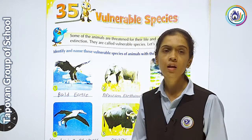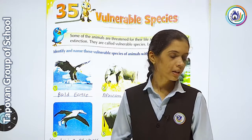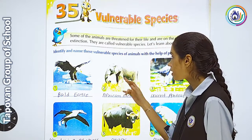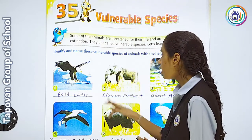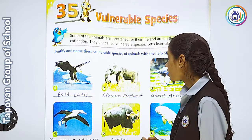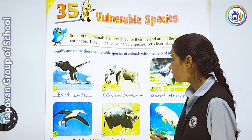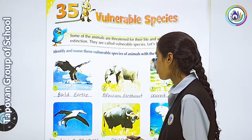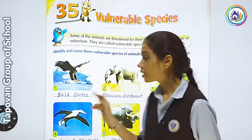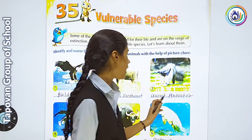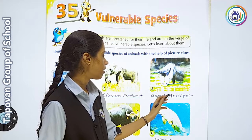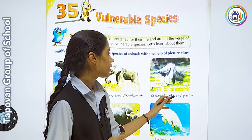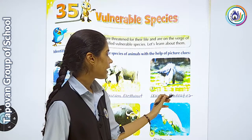The first picture is a bird — its name is Bald Eagle. Spelling: E-A-G-L-E, Bald Eagle. The second one is African Elephant. Spelling: A-F-R-I-C-A-N E-L-E-P-H-A-N-T, African Elephant. The third picture is Giant Anteater — Giant Anteater.